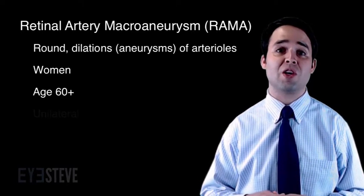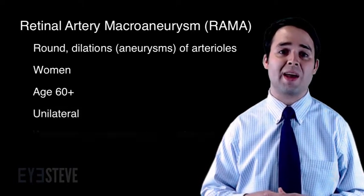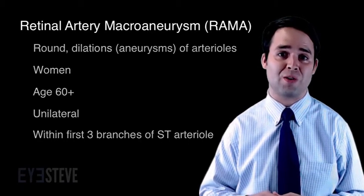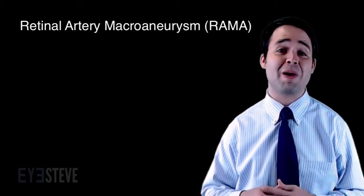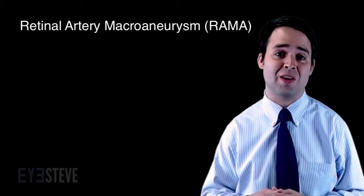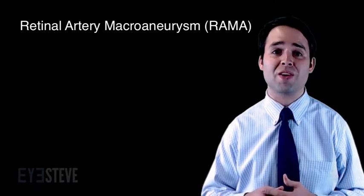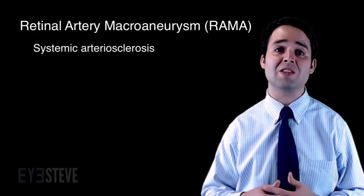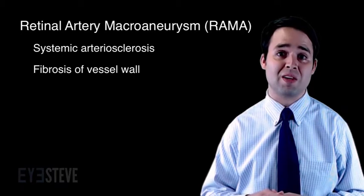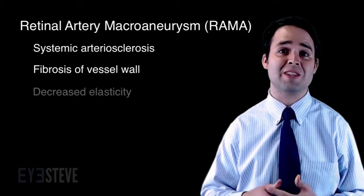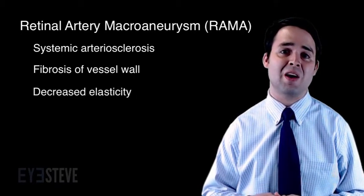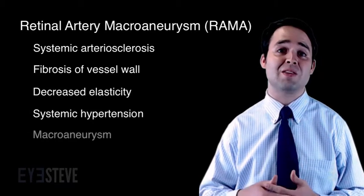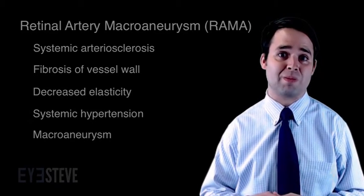They typically occur in just one eye and within the first three branches of the supratemporal retinal artery. The pathogenesis is not completely understood, but one theory is that systemic arteriosclerosis causes fibrosis within the wall of the vessel. The resulting decreased elasticity, coupled with systemic hypertension, leads to development of the macroaneurysm.